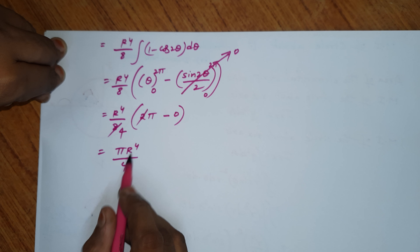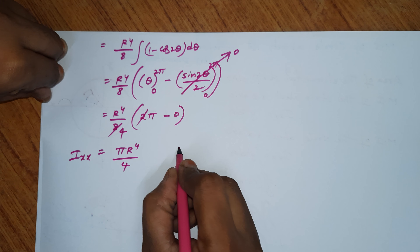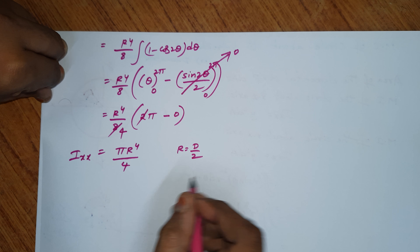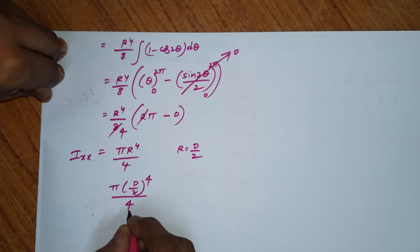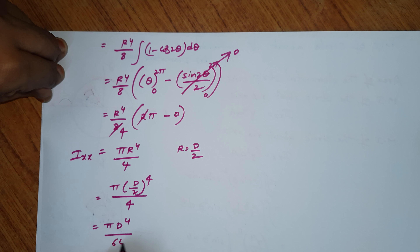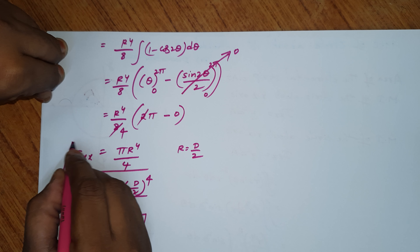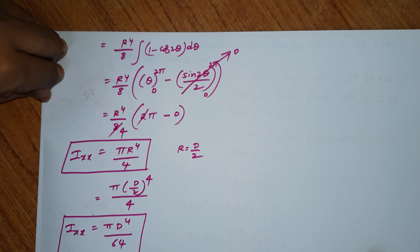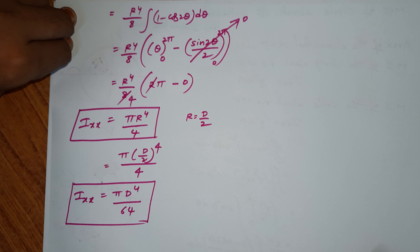Therefore Ixx = R⁴/8 · 2π = πR⁴/4. In terms of radius, Ixx = πR⁴/4. Substituting R = D/2 to express in terms of diameter: Ixx = π·(D/2)⁴/4 = πD⁴/(16·4) = πD⁴/64. So the moment of inertia of the circle about its centroidal XX axis is πR⁴/4 (in terms of radius) or πD⁴/64 (in terms of diameter).